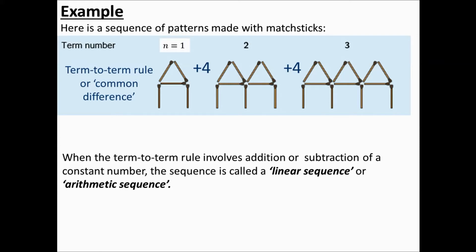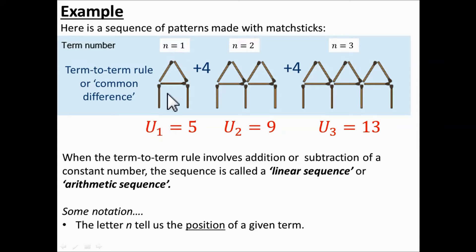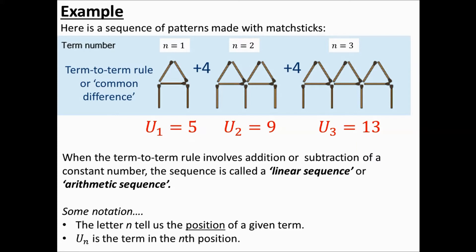I'm going to introduce some notation now. I'm going to call the position of each term n. So when n equals one I'm talking about the first term, when n equals two I'm talking about the second term, and when n equals three I'm talking about the third term — so n is just the position of a given term. I'm going to denote the actual terms in the sequence using u with a subscript n. So u₁ is the first term which is five, u₂ is the term in the second position which is nine, u₃ is the term in the third position which is thirteen. So u subscript n is the term in the nth position.